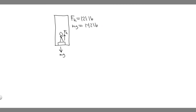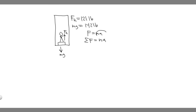Now we want to use Newton's second law to solve the problem. Newton's second law tells us the net force equals mass times acceleration. You get the net force by taking the sum of the forces and setting it equal to mA. So now we want to find the net force: mA equals — 121 pounds is going upwards, so we label it positive, and then we subtract mg, which is 142 pounds, because it's going downwards.